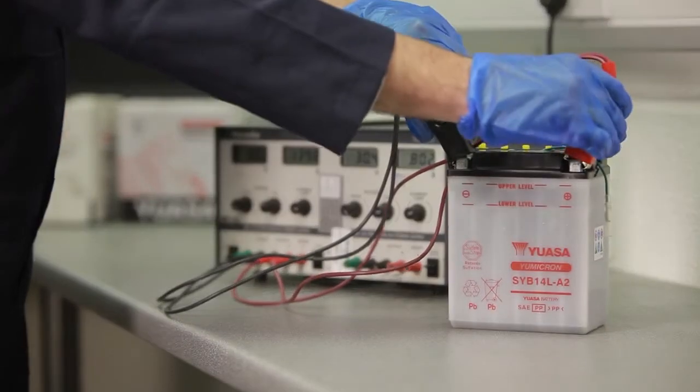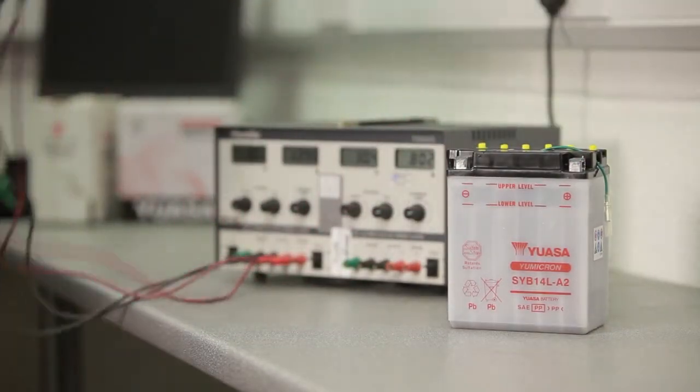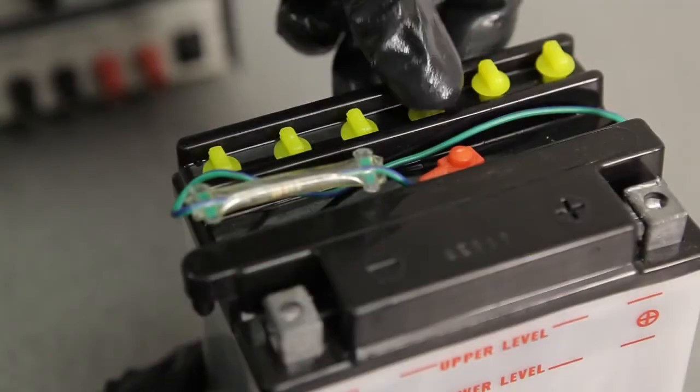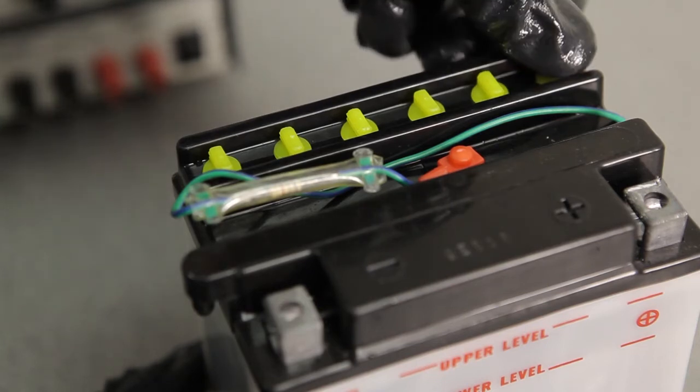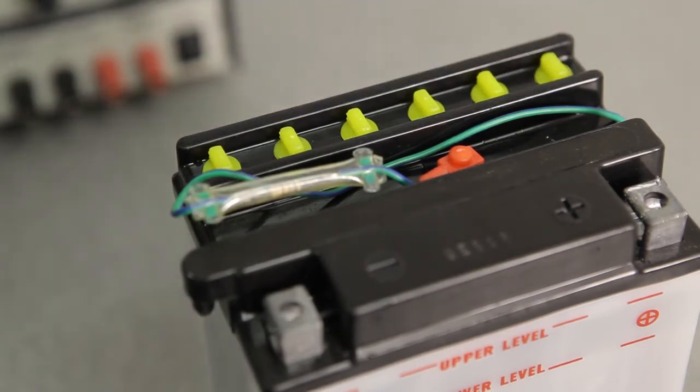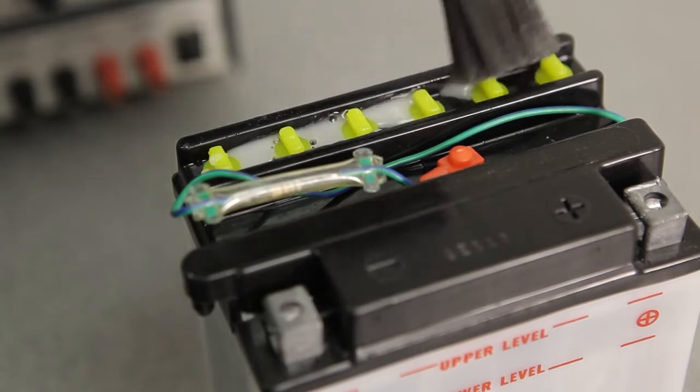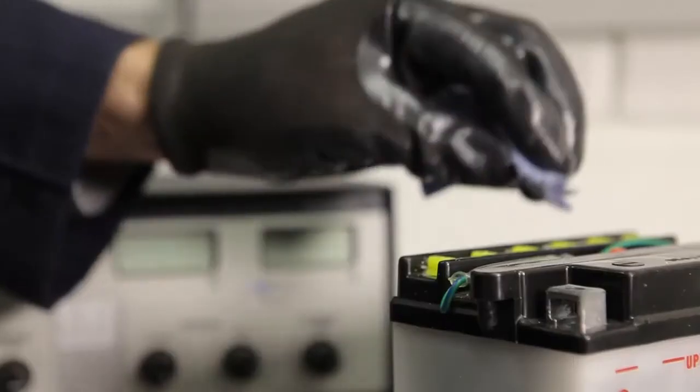When charging is complete, turn off the charger and disconnect it from the battery. Push or screw down the filler caps as appropriate, making sure not to over-tighten them, and clean off any spilled electrolyte with a water and baking soda solution.